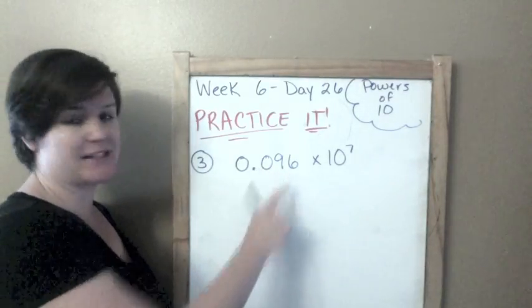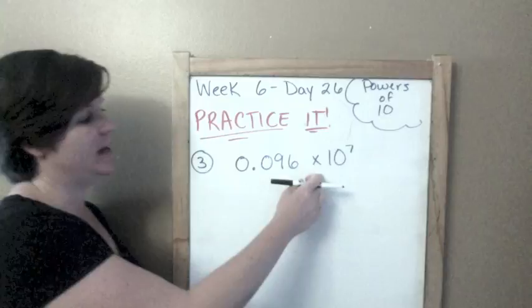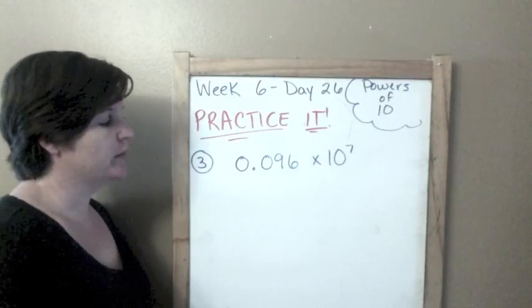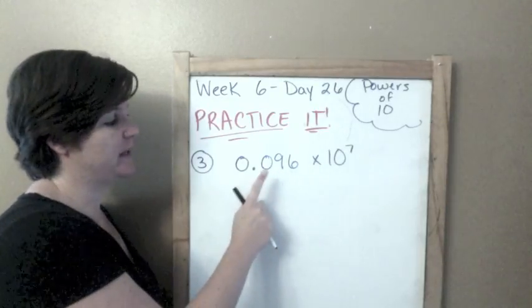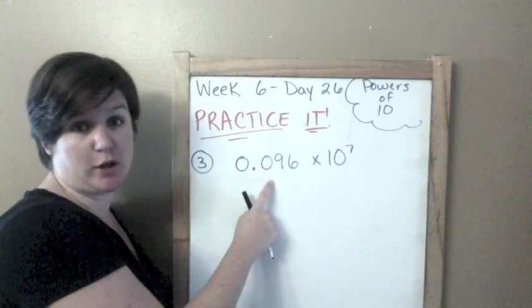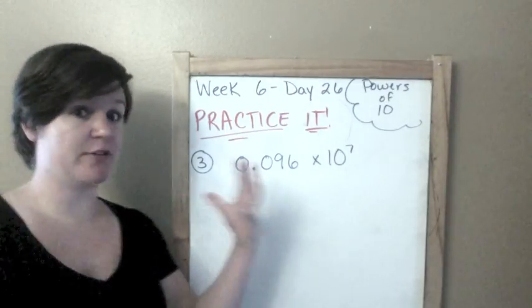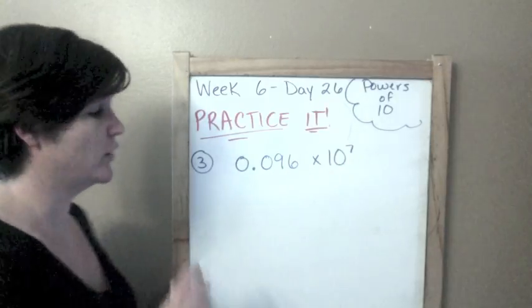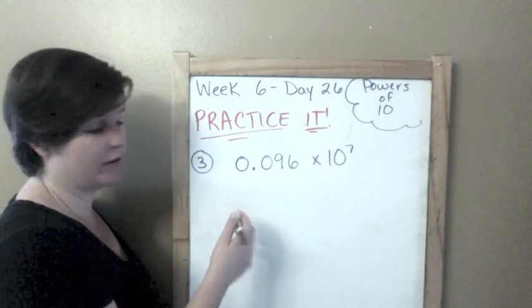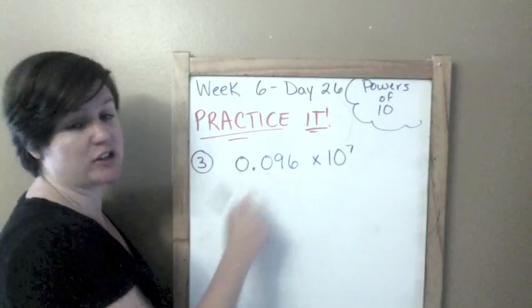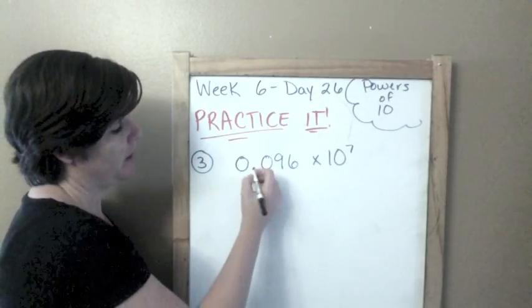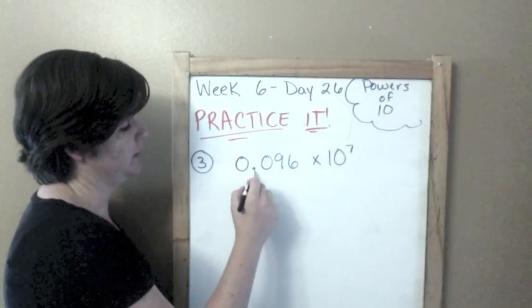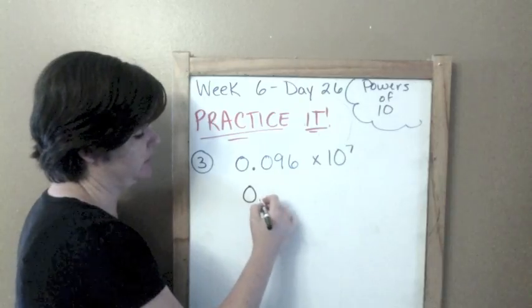I've got 0.096 times 10 to the seventh power. I'm multiplying, that means am I going to make this number bigger or smaller? I'm going to make it bigger. Am I going to go to the right to make it bigger or to the left? Going to the right would actually make this number bigger, so we're going to go to the right. I'm going to go seven jumps to the right into a new place value.